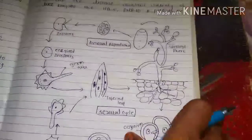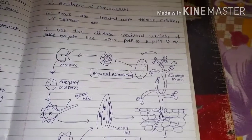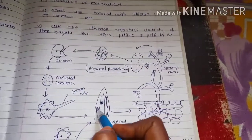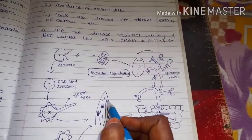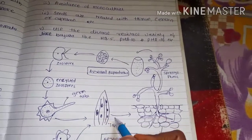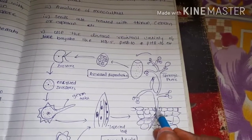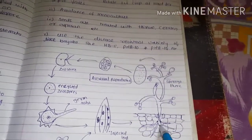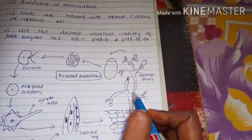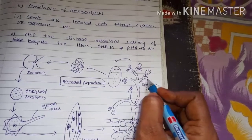In the disease cycle, two types of reproduction are present: asexual reproduction and sexual reproduction. First, the causal organism infects the leaves. On the leaf surface, there is initially a whitish color spot which later turns brown. The fungal spore enters the leaf stomata, mycelium is produced, and this mycelium produces sporangiophores. The sporangiophores are dichotomously branched.